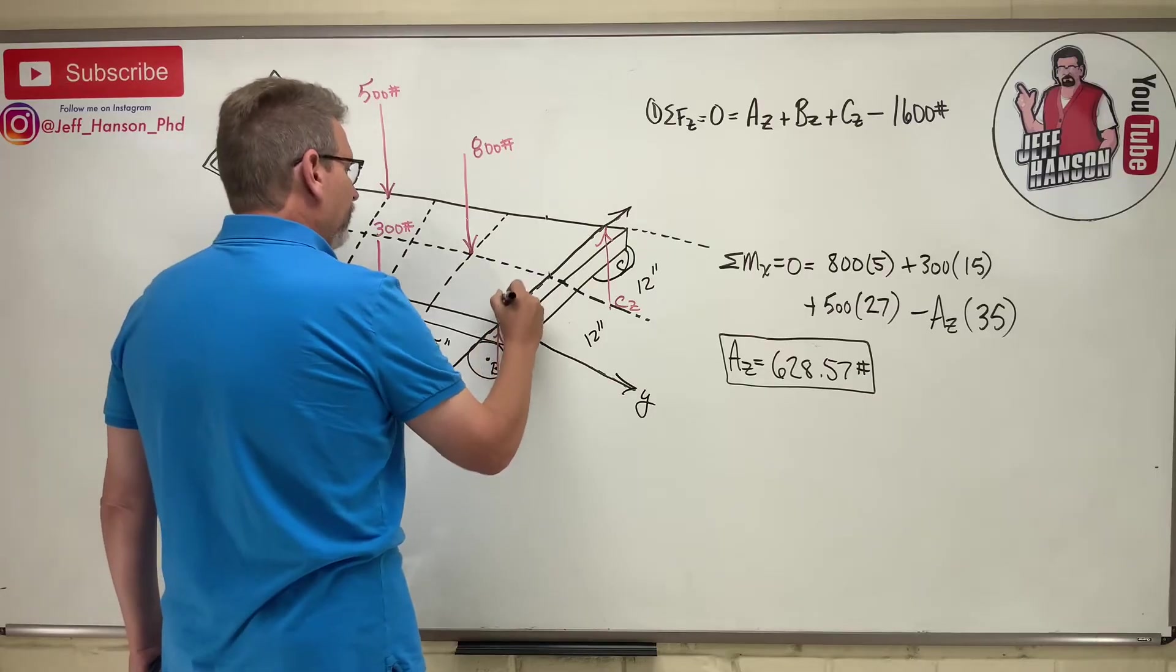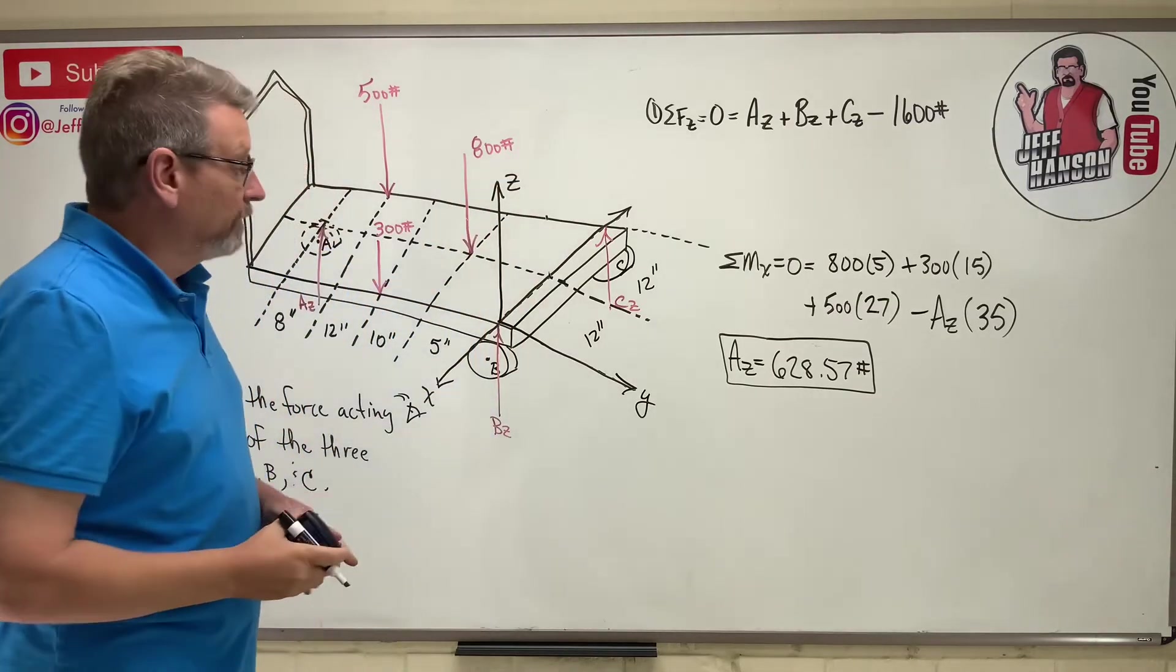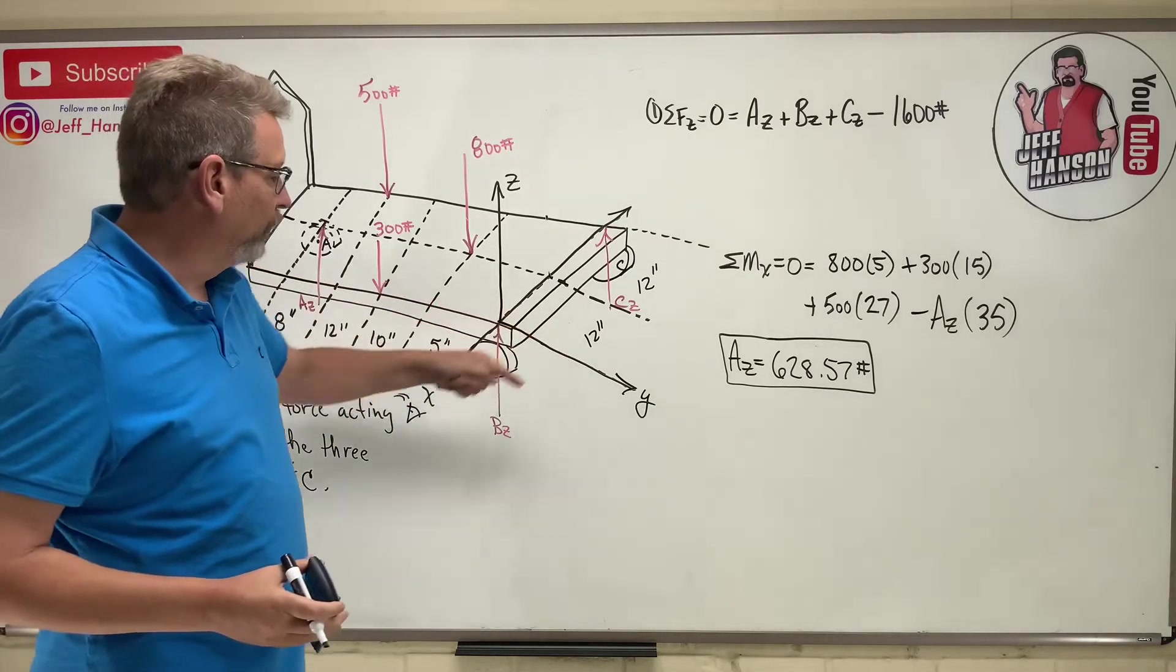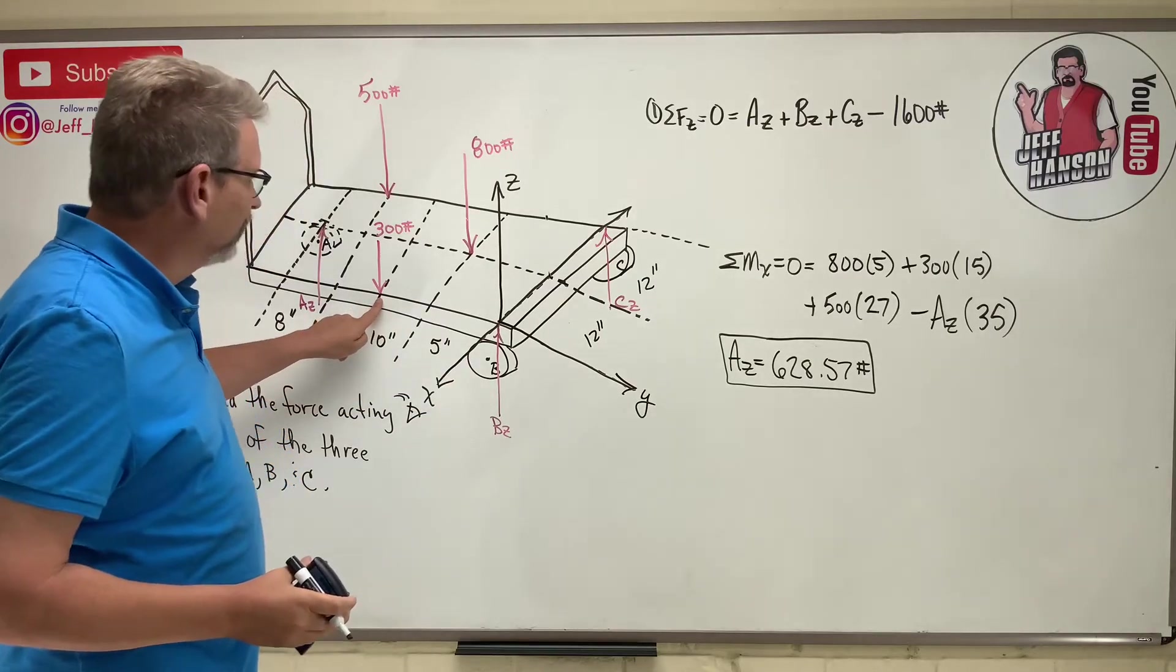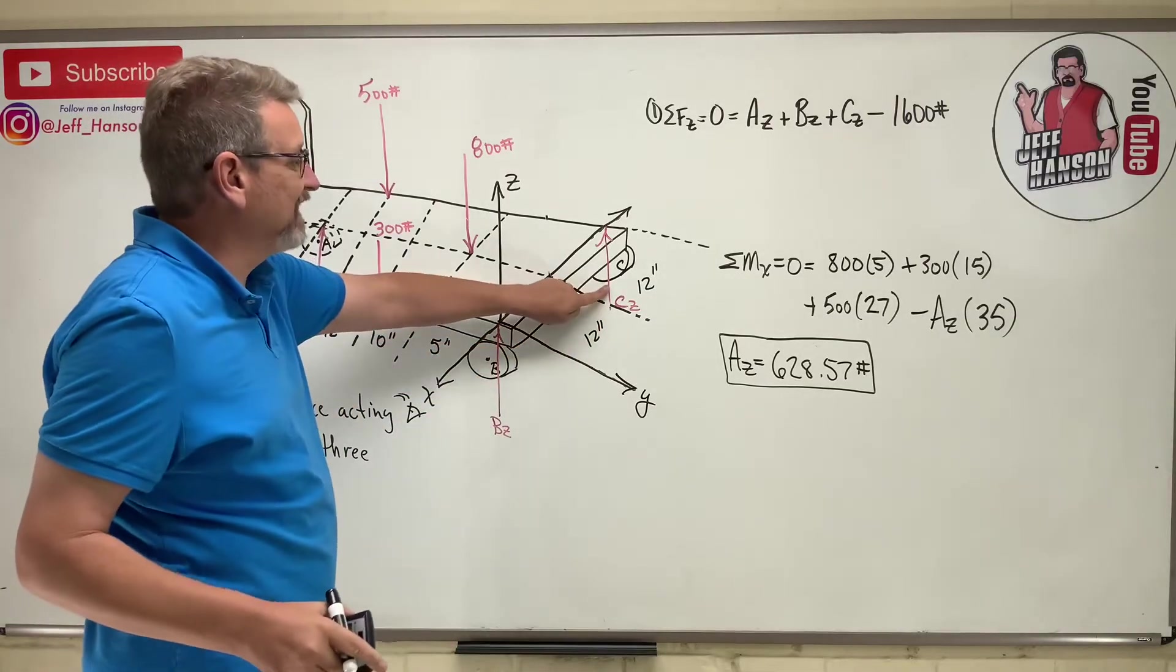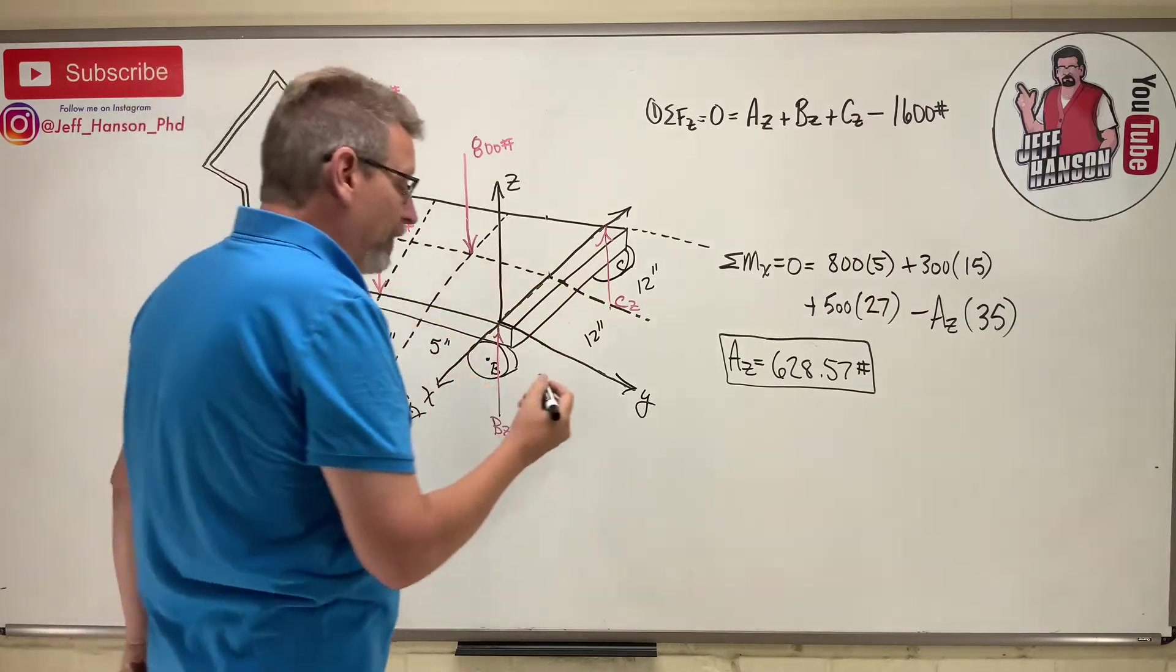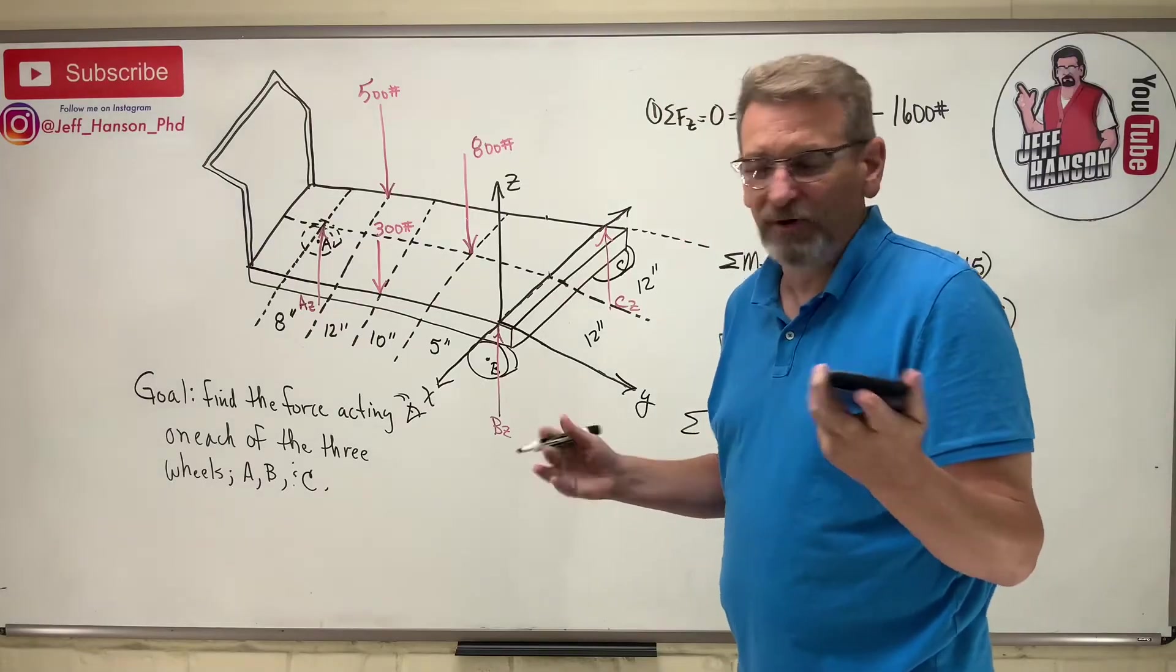Now why in the world did I just do that? Do you see the trick? Because now when I'm talking about spinning around the y, now the edge of the cart here is my y-axis. So who gets knocked out? One of my unknowns and that 300. So what does that leave? Well, it leaves Az, but I already know Az, plus it leaves Cz - one unknown.